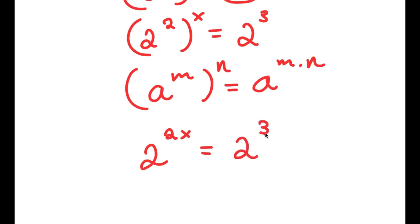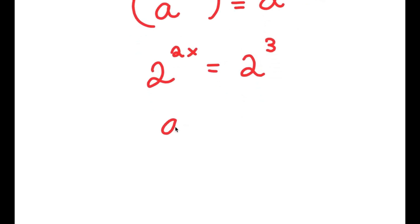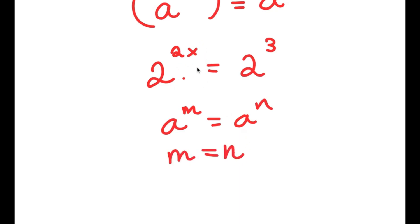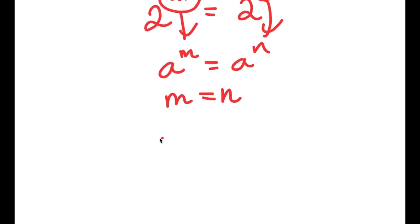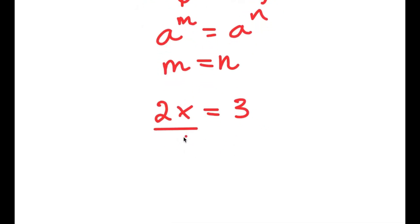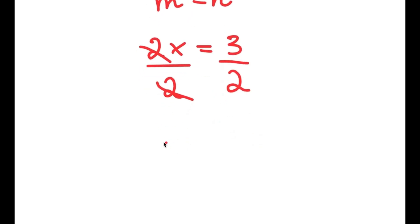And now this is equal to 2 to the power of 3. If I have a to the power of m equals a to the power of n, this means m equals n. So in this case, 2x is equal to 3. This is a simple equation — all I have to do is divide both sides by 2, and I get x is equal to 3 over 2.